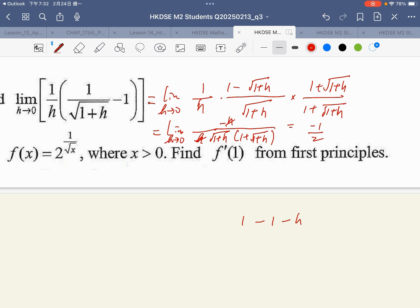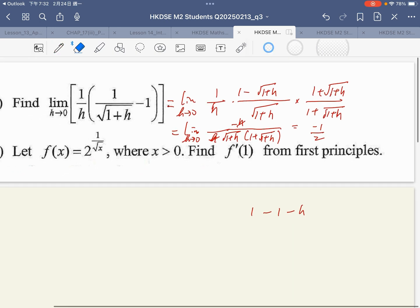Taking the limit gives negative 1 over 2. So the answer should be negative 1 over 2. This is the first part of the solution.